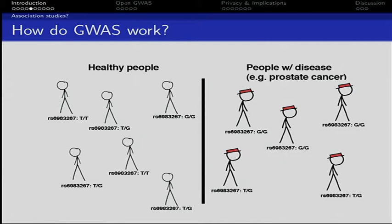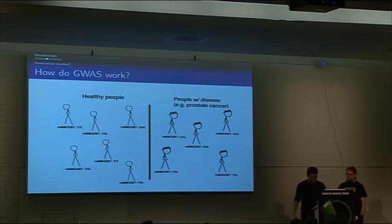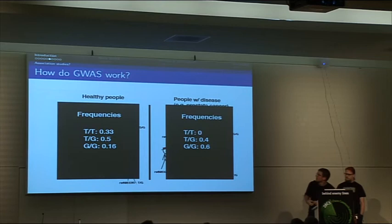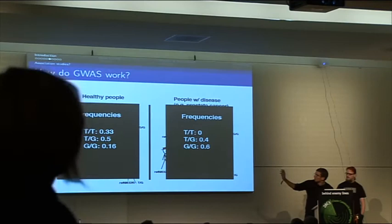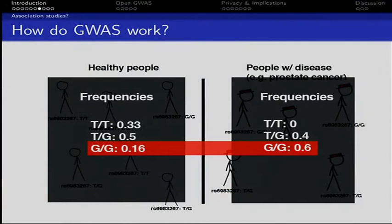We check certain SNPs — the SNPs have unique names, always starting with RS and then some number. Because we are diploids, we have two nucleotides at that position: TT, TG, or GG. GWAS works by comparing the frequencies. Our healthy population has TT 33%, 50% TG, and our prostate cancer population has 60% GG. That's a big difference, and we can link the GG SNP to prostate cancer.